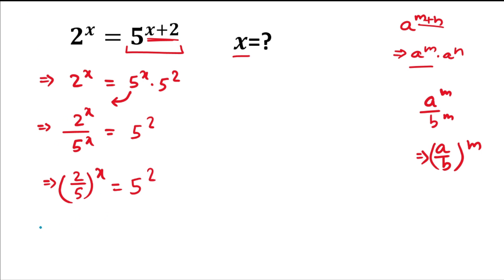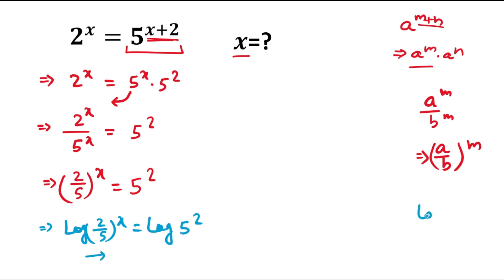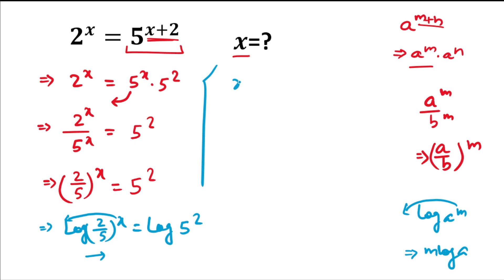After taking log of both sides, the left hand side becomes log of (2/5) raised to the power x, and the right hand side becomes log of 5 squared. Using the log rule log(a^m) = m·log(a), we take x to the front and write x·log(2/5).